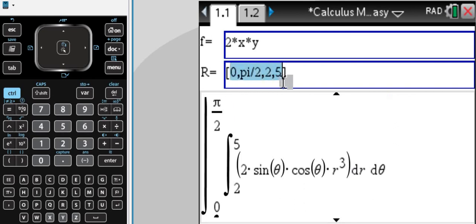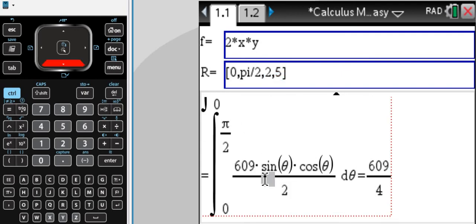Now the bounds are in polar coordinates. The r, the last two figures here, are the two bounds for the radius, 2 to 5. And the first two are the angle, 0 to pi over 2. And of course, if you scroll down, you can see the simplified integral and the final solution right here.